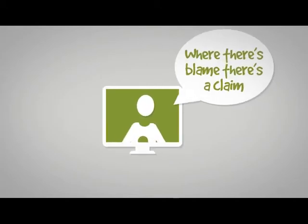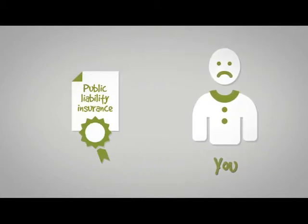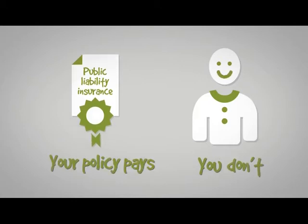The unwritten rule of where there's blame there's a claim means someone has to pay. And that someone is you. Except if you have Public Liability Insurance your policy pays and you don't.